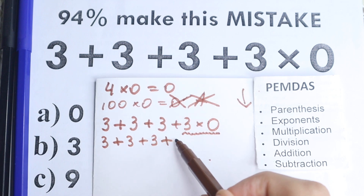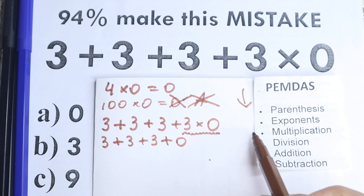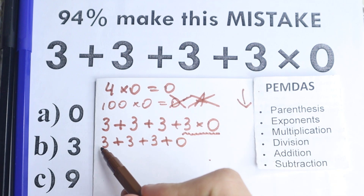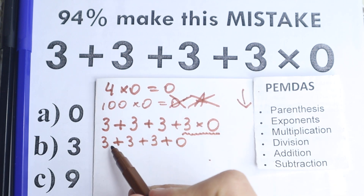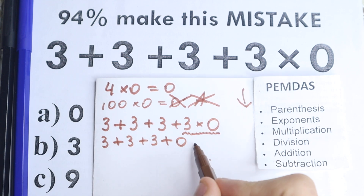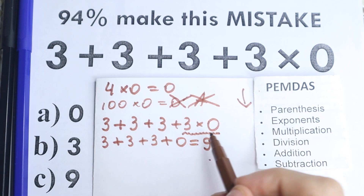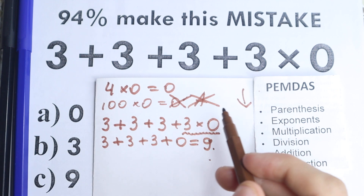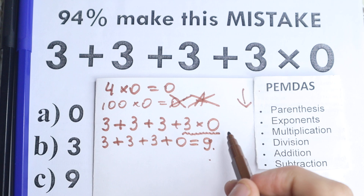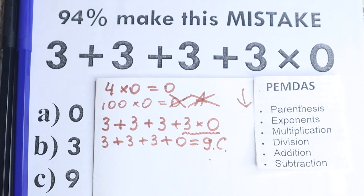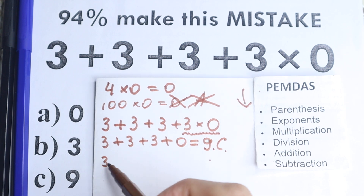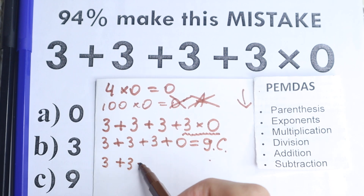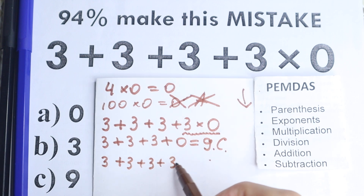We have plus 0. Right here we complete the multiplication. Now we no longer have a multiplication part — we only have addition. So we add four numbers: 3 plus 3 plus 3 plus 0 equals 9. As you can see, the answer is not 0, which is a very popular and common mistake. So the correct answer is option C. To summarize: 3 plus 3 plus 3 plus 3 times 0 — the answer is 9.